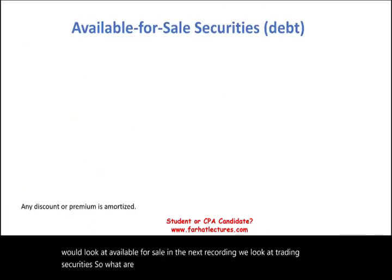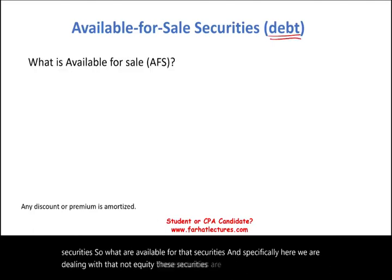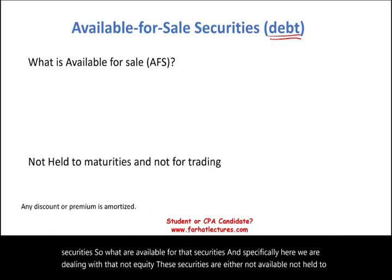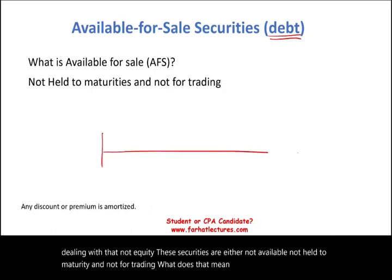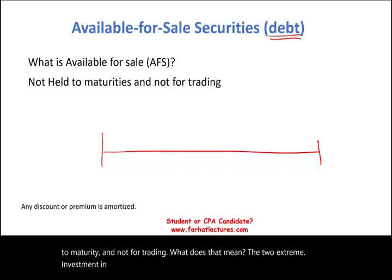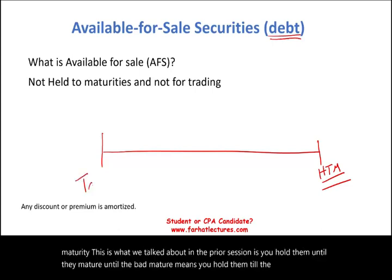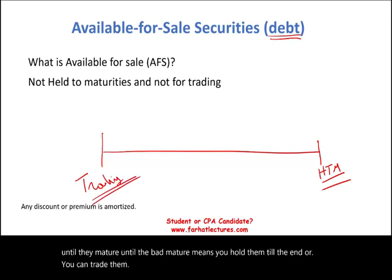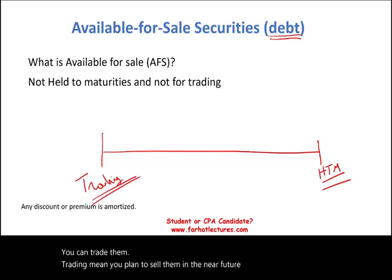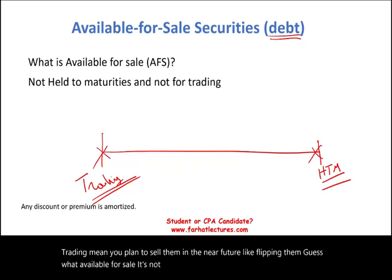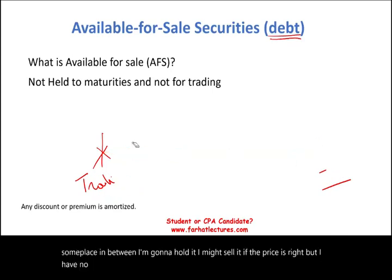What are available for sale debt securities? These securities are either not held to maturity and not for trading. The two extremes of debt investment are: you hold them until they mature — held to maturity — or you trade them, meaning you plan to sell in the near future, like flipping them. Available for sale is somewhere in between: you might sell it if the price is right, but you have no plan to hold it forever, and you're not intending to flip it in the near future.